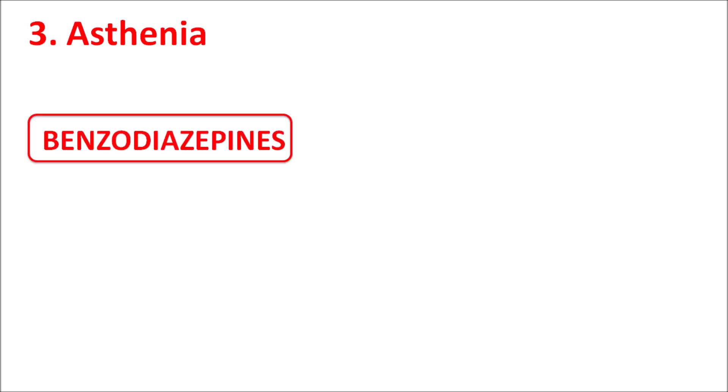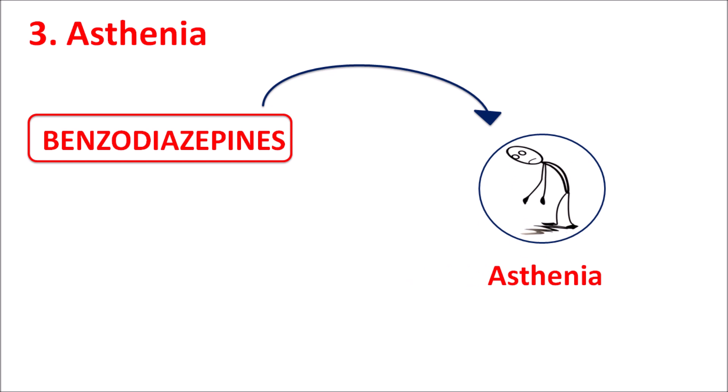The third side effect is asthenia. Since benzodiazepines produce CNS inhibition, they can produce asthenia — lack of energy, fatigue, and weakness in the patients.